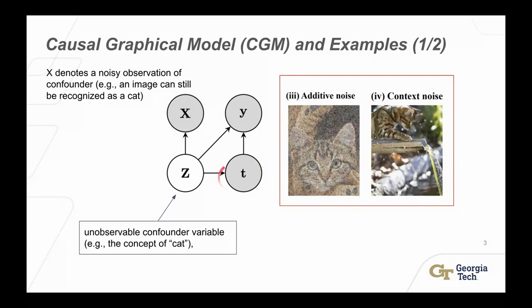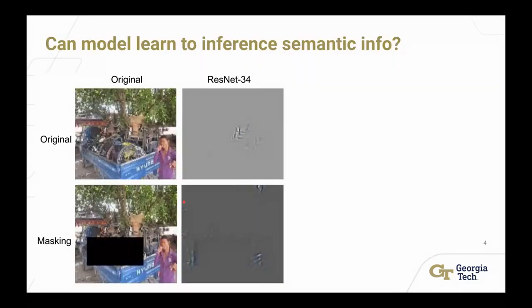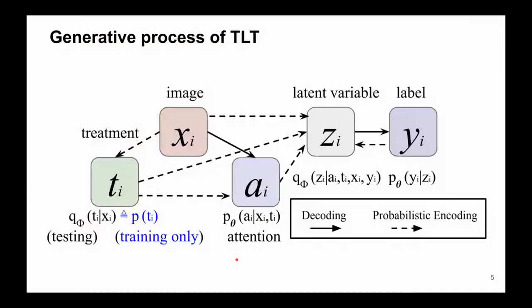So in this work, we consider: given this kind of treatment information, can we model it within a causal graphical model and provide robust image classification? We find that if we have masking or additive perturbation on the input image, the model can infer this kind of pattern. This motivates our design: once we have an image, we can try to recover a latent variable close to its concept, while modeling the treatment with attention. The attention model considers the treatment during training, and for testing it performs this inference by itself.